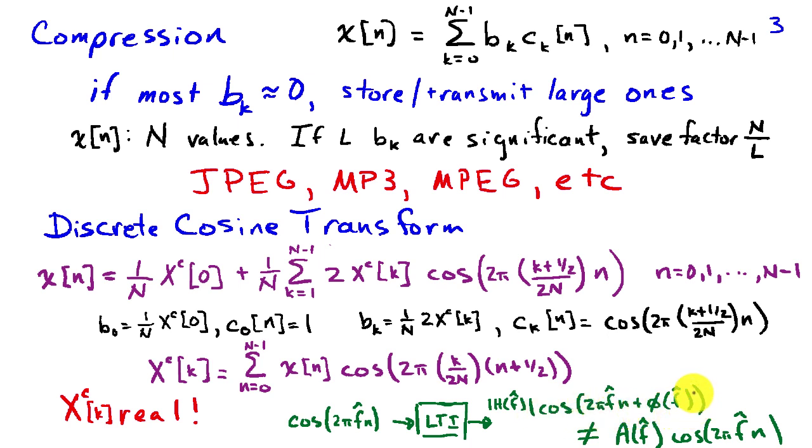That multiplication is fine. But we have this phase factor that's inside the argument of the cosine. So I can't write the output as the product of something that depends on the system at that frequency times the input cosine.